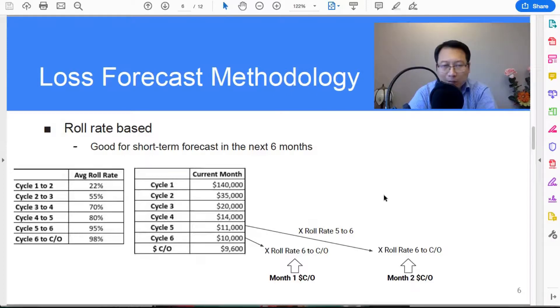Okay, so then you get the cycle six balance in month one, then you time the roll rate from cycle six to charge off, that's 98 percent again, then you will get the charge off forecast in month two.